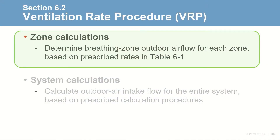The ventilation rate procedure provides the calculations to compute the breathing zone outdoor air flow, zone air distribution effectiveness, and resulting zone outdoor air flow. These zone level flows are then used to determine the outdoor air intake flow — the volume of air needed to enter the air handler, rooftop, or ventilation system to satisfy the outdoor air requirement.